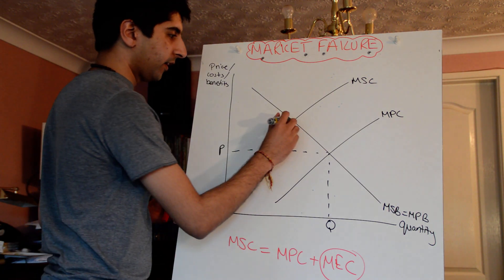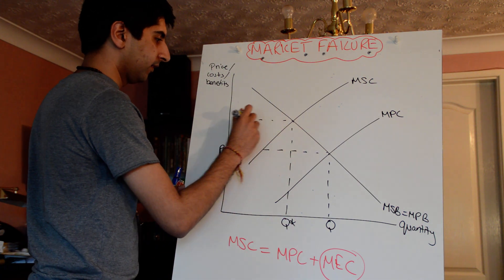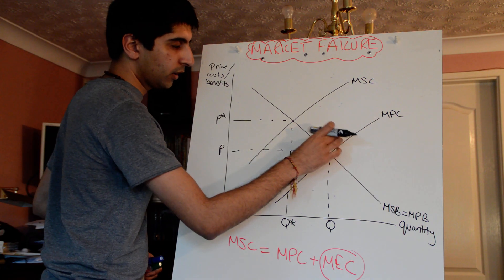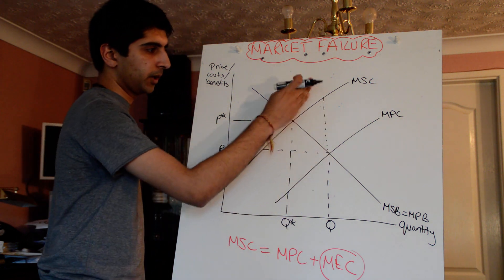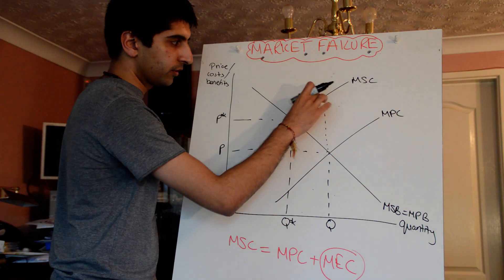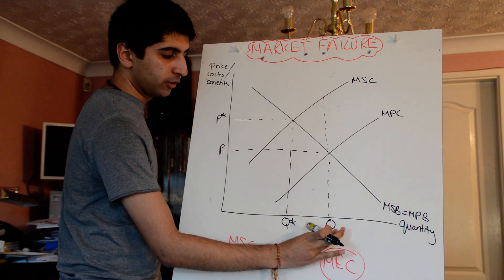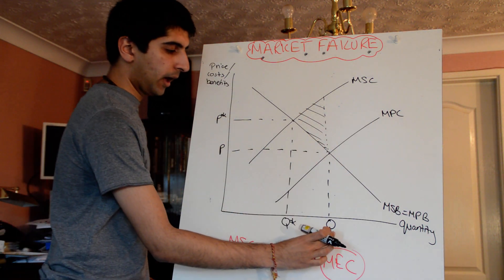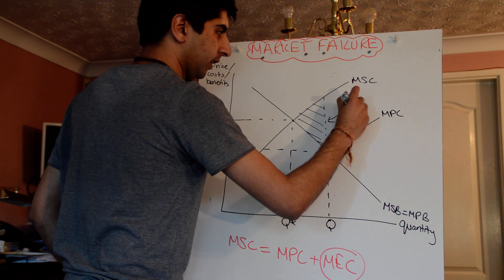Whereas society would prefer resources to be allocated at Q-star and the good to be priced at P-star. The negative externality is the vertical distance between the marginal private cost curve and the marginal social cost curve. By over-producing and over-allocating resources beyond Q-star, that extra cost to society up to the marginal social cost curve — that entire triangle — is the welfare loss: the loss to society from allocating more resources than what society wants. That triangle represents the negative externality and the welfare loss.